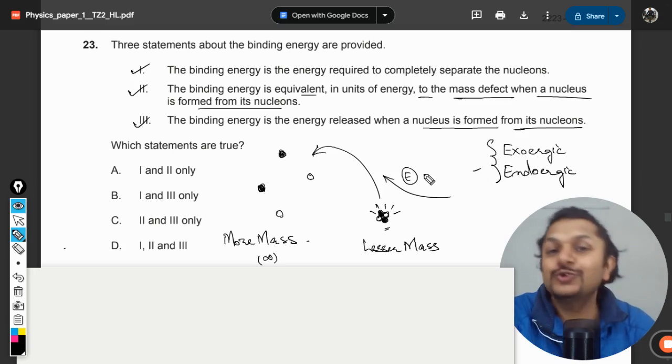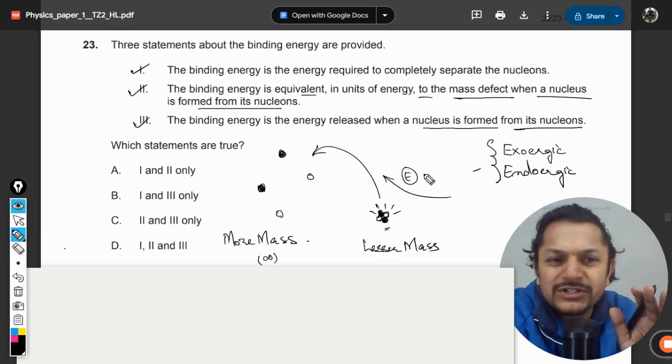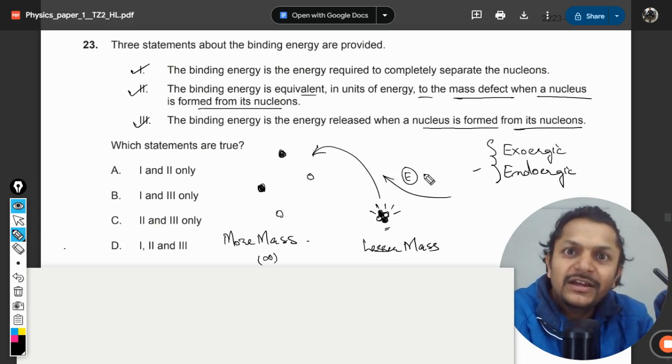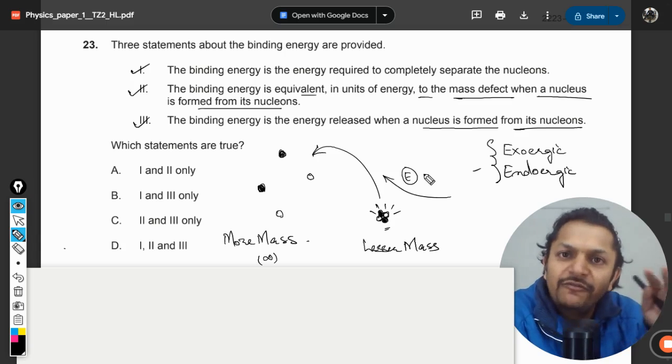At this point, the students who have chemistry as a subject please try to understand: endothermic and exothermic, they are chemical reactions. When you talk about the nuclear reactions we do not use those terms. We use exoergic and endoergic.